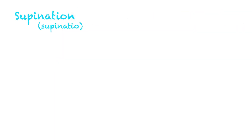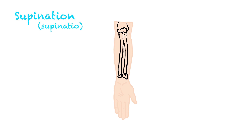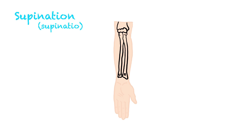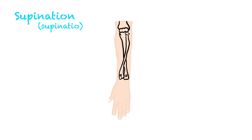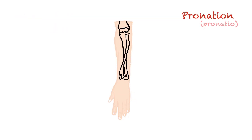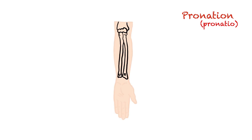Supination — the term supination means turning outward. It is the outward rotation of the forearm, usually around the long axis of the radius. It is the normal anatomical position — as a result of this movement, the palm of the hand looks forward. Pronation — the term pronation means introversion. It is the movement of the radius, one of the bones forming the forearm, rotating around the long axis of the forearm and turning the forearm inward. At the end of the pronation movement, the palm faces back. Placing your palm on the table is an example of pronation.